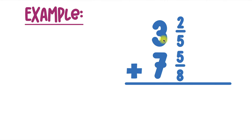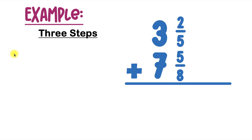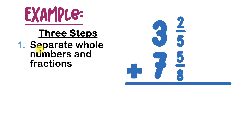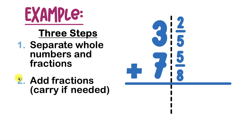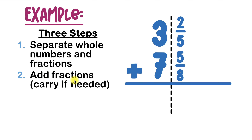Here we have three and two fifths plus seven and five eighths. Remember, we'll need the three steps. Step number one is to separate whole numbers and fractions, so I'll draw a line here to do that. Step number two, we're going to add the fractions and carry if needed. So let's add these fractions.